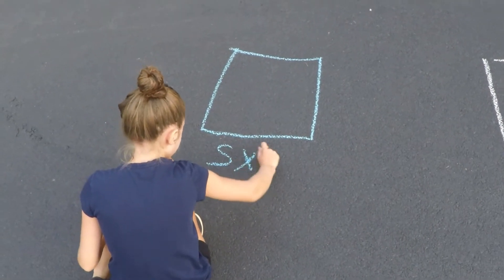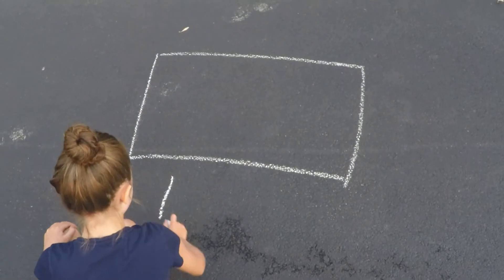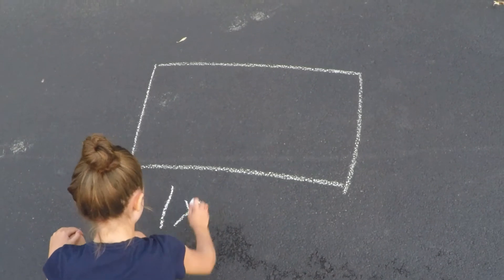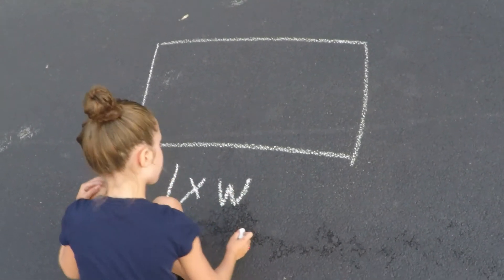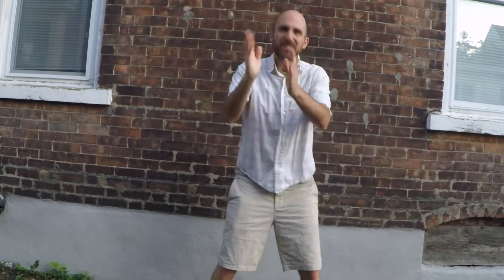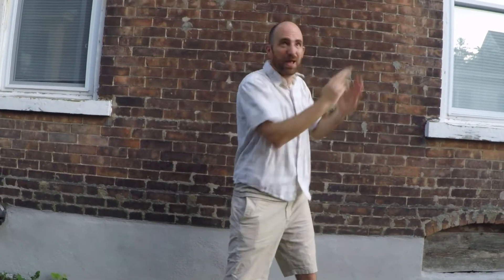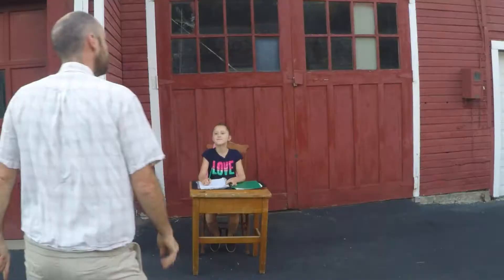Let's find the area! Square: side x side! Rectangle: length x width! Square: side x side! Rectangle: length x width! Four corners and four sides on a square and a rectangle too! Side x side and length x width are the formulas that you will use!